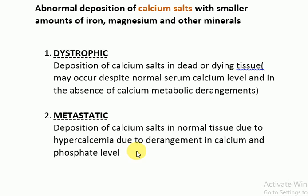Other causes include familial hypocalciuric hypercalcemia. The main sites of metastatic calcification are the kidneys, lungs, stomach, blood vessels, and cornea.